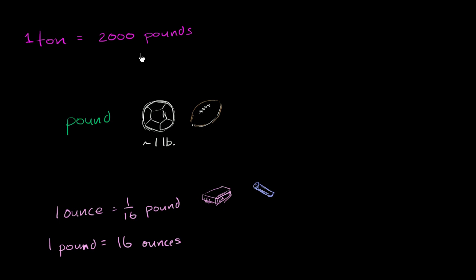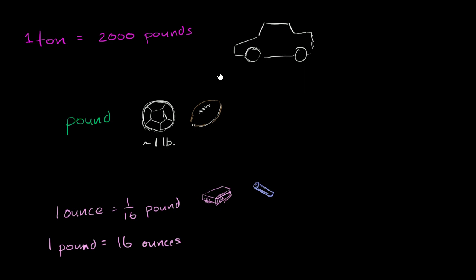To get a sense of what 2,000 pounds is like, a car is a good example. Your average mid-sized sedan would weigh about a little under to a little over 2 tons, so around 4,000 pounds. A small van, minivan, or truck would be larger than 2 tons. Smaller cars are probably around 3,000 pounds, which is less than 2 tons. So a car is approximately 2 tons, which hopefully gives you a sense of what units you'd use in the US customary system for different scales of weight.